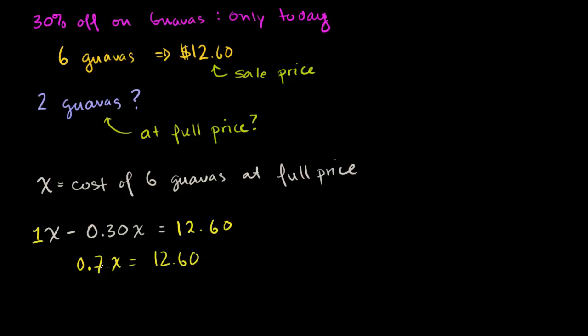You say, hey, 70% of the full price is equal to my sale price, right? I took 30% off. This is 70% of the full price. You might just skip to this step once you get used to these problems a little bit. And now we just have to solve for x. Divide both sides by 0.7, so you get x is equal to 12.60 divided by 0.7.